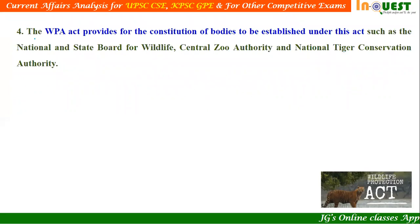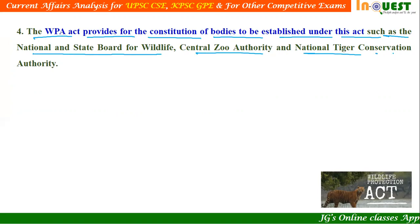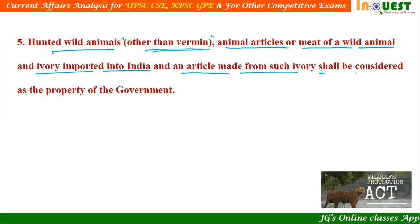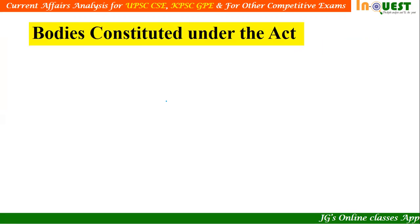Feature number four: the Wildlife Protection Act provides for the constitution of bodies such as the National and State Board for Wildlife, Central Zoo Authority, and National Tiger Conservation Authority. Feature number five: hunted wild animals — other than vermin — and animal articles, meat of wild animals, and ivory imported into India, along with articles made from such ivory, shall be considered as the property of the government. No individual can have authority over such items.